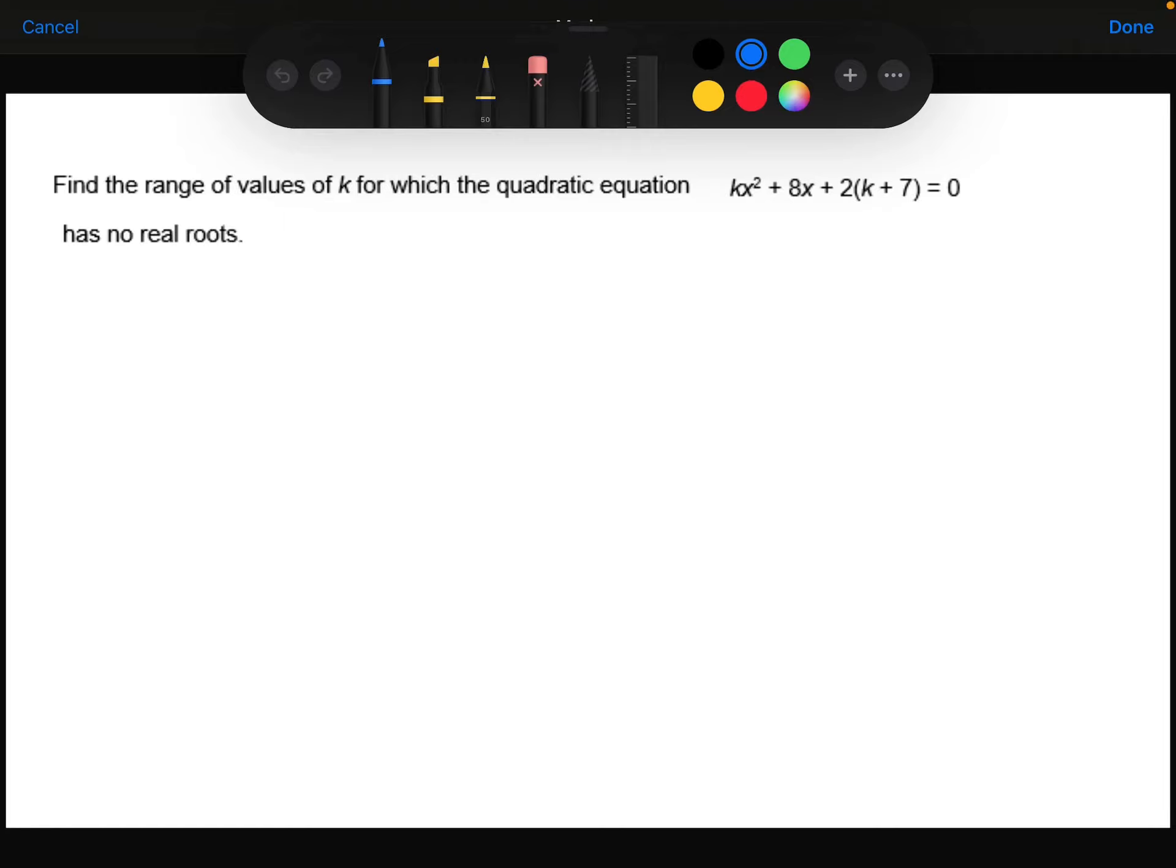Find the range of values of k for which the quadratic equation kx² + 8x + 2(k + 7) = 0 has no real roots.